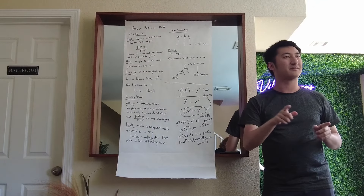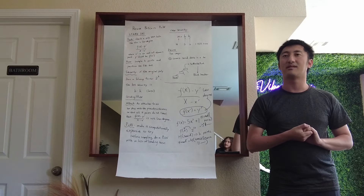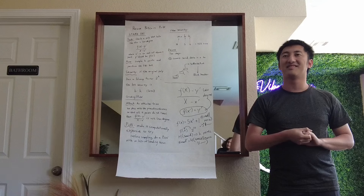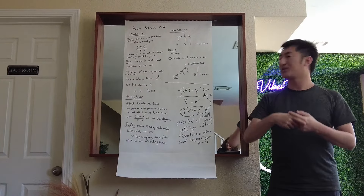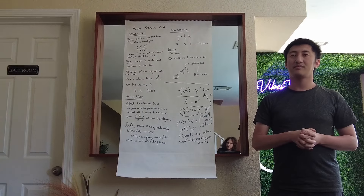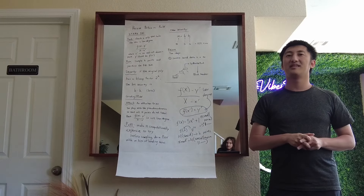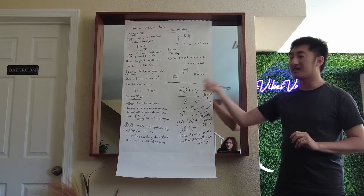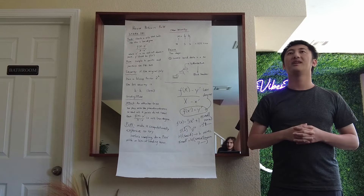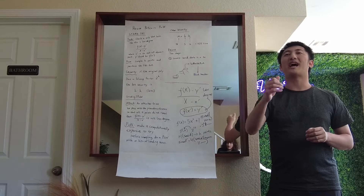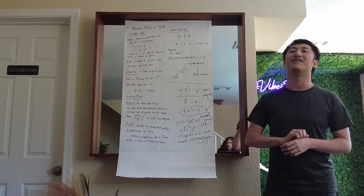Can we use something like the digits of pi — a 'nothing up my sleeve' kind of thing — instead of expensive proof-of-work? The problem with that is that if I know you are going to query position based on pi, when I'm generating the Merkle tree, I'm going to change that set of values.